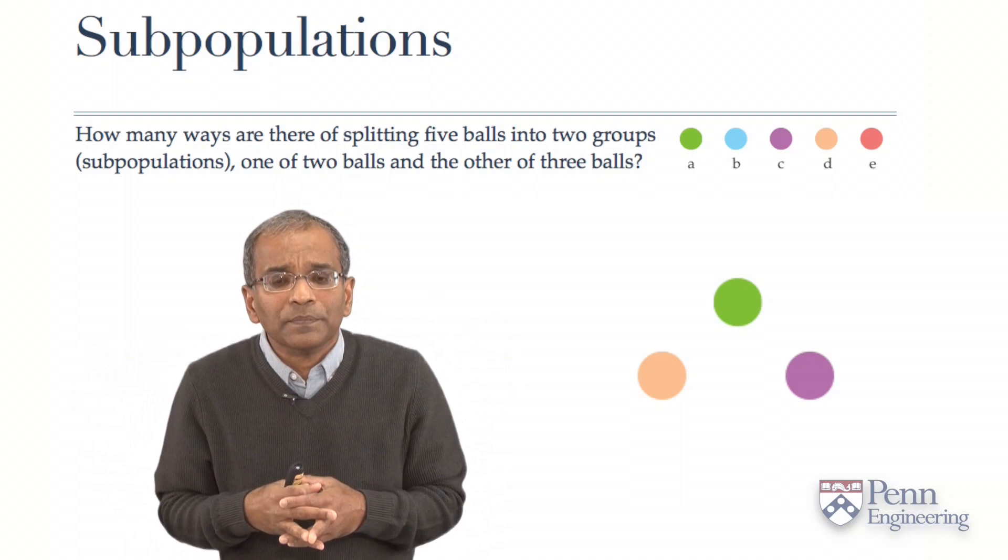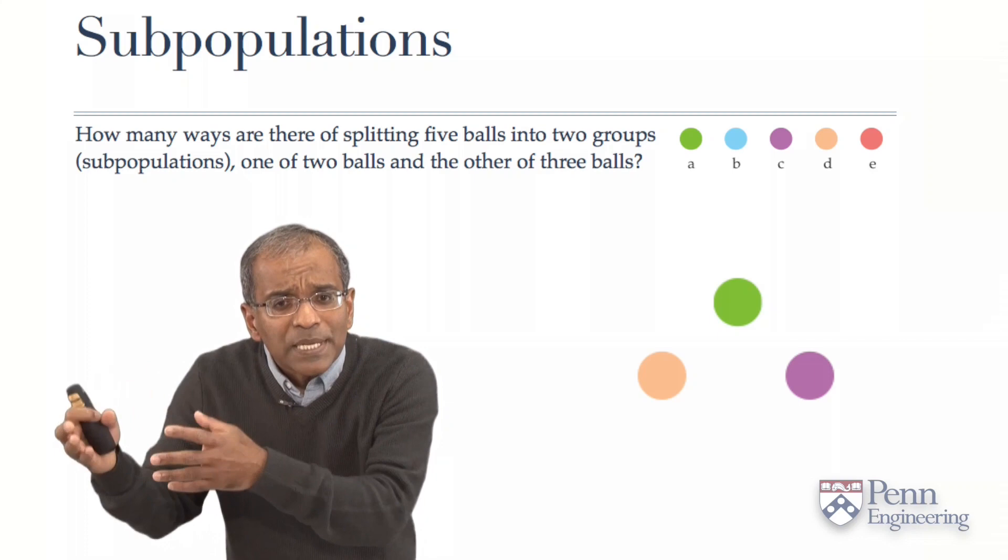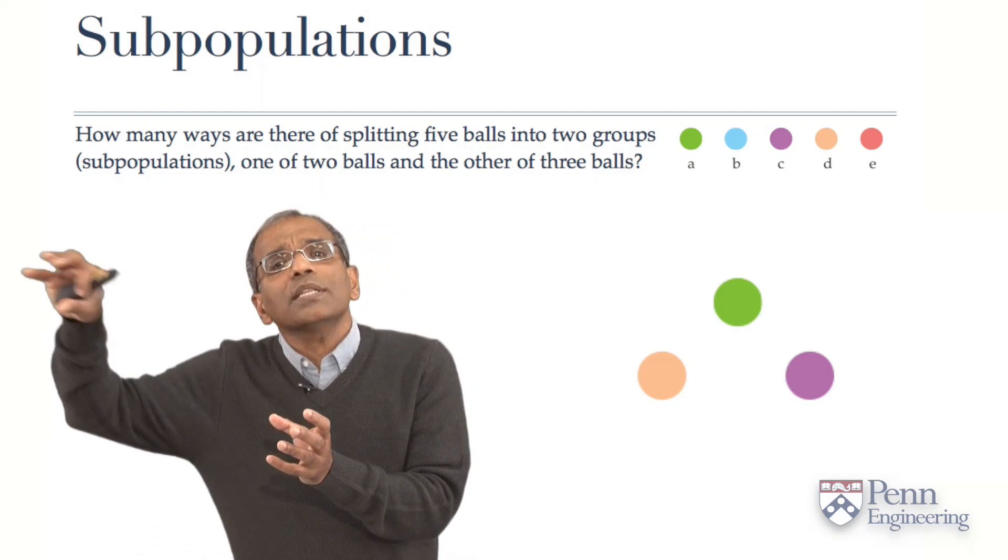Now, here's one group of three. Notice that we have implicitly specified the remaining elements. The blue and the red balls are the ones which are in the other group.